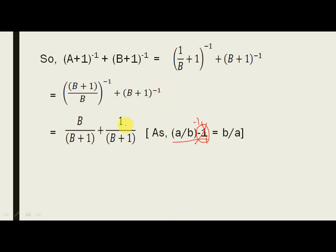Now, you see the denominators are the same. So, their LCM is also the same B plus 1. Now, add the numerators and you will see that you get B plus 1 in the numerator as well as the denominator. You cancel both of them out and you are left out with 1.